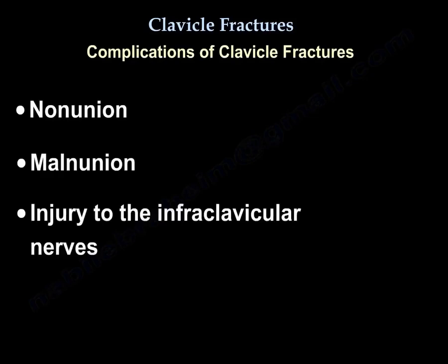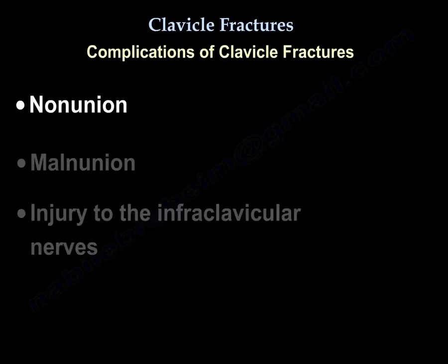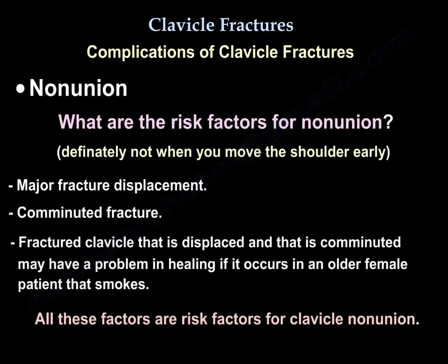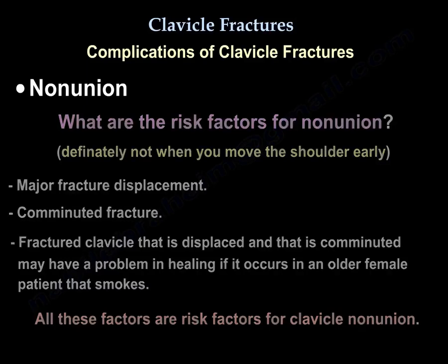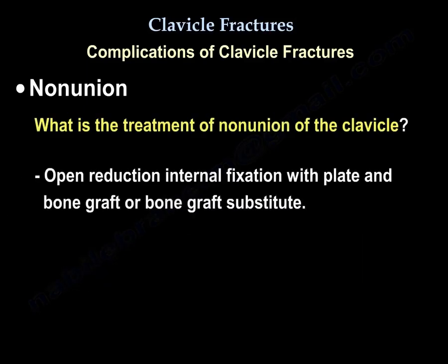Complications of clavicle fractures include nonunion, malunion, and injury to the infraclavicular nerves. Risk factors for nonunion include major fracture displacement and comminuted fracture. A displaced and comminuted clavicle fracture may have problems healing, especially in an older female patient who smokes. Note that early shoulder movement is definitely not a risk factor for nonunion.